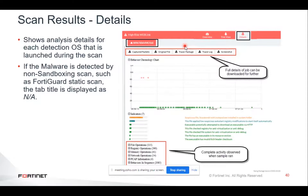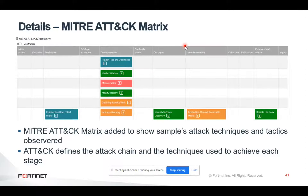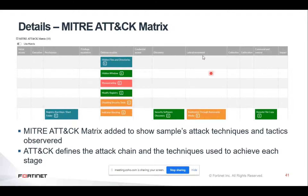Lastly, there is the MITRE ATT&CK framework. It's a government-funded research organization, and ATT&CK stands for Adversarial Tactics, Techniques, and Common Knowledge. It was started back in 2013 and is a matrix that maps techniques to the different stages of an attack, or what a threat actor is trying to accomplish. FortiSandbox maps the characteristics observed when analyzing a sample to this framework. For example, you can see indicators of persistence, discovery, defense evasion, lateral movement, and command and control identified for a specific file.